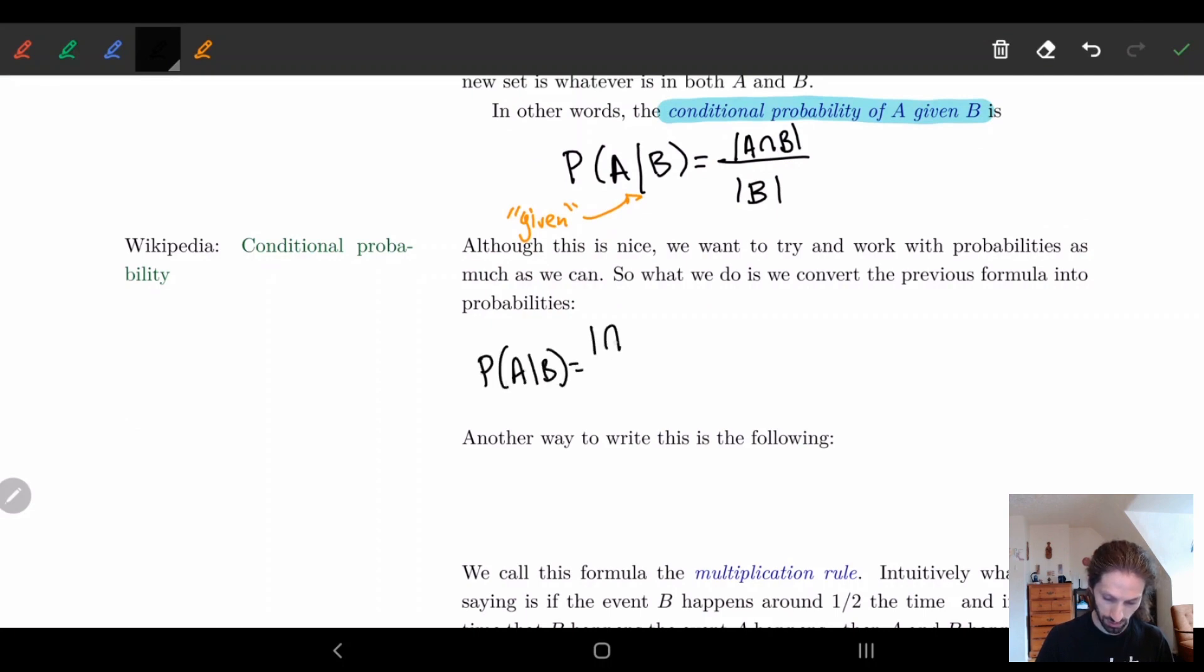Basically what we're going to do is take A given B. So this is equal to A intersect B divided by B. And what I'm going to do is divide the top by the size of omega and divide the bottom by the size of omega. And then what you'll notice is that what this gives us is the definitions for both the probability of the top thing and the bottom thing. So we have P(A intersect B) on top and P(B) on the bottom. So you just take the probability of A intersect B divided by probability of B. And so now we have a nice way of reading this. The probability of A given B is equal to the probability of A and B divided by the probability of B.